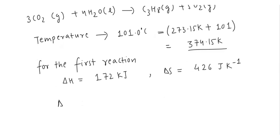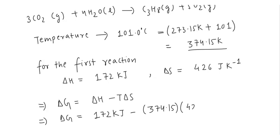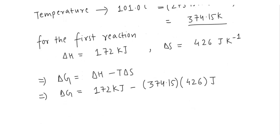Here we know that ΔG is equal to ΔH minus T ΔS which means here ΔG will be equal to 172 kJ minus T which is the temperature which is here 374.15 multiplied by the entropy is 426 and the answers will come in Joule. Here if we see then we can write ΔG is equal to 172 kJ and we will multiply this expression and then convert it into kJ. We will get here 159.35 kJ.